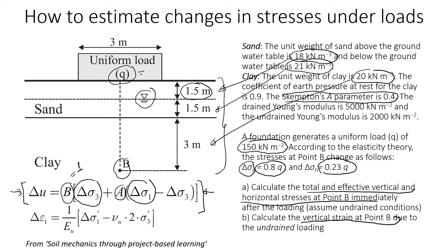The difference between immediate and long-term application is that when load is applied immediately, there will be generation of pore pressure and we will have undrained conditions in the short term. Over a long period — say five or six years — when excess pore pressure dissipates, we change to drained conditions. For this exercise we are dealing with undrained conditions, so we will use the undrained Young's modulus.